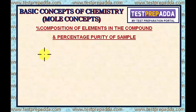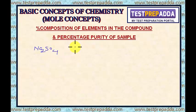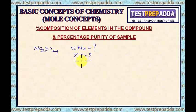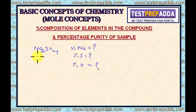First of all, how do we find the mass percentage of each element in a compound? Take an example: let us say Na₂SO₄. I want to find the percentage of sodium, the percentage of sulfur, and the percentage of oxygen. To find that, first find the molar mass of Na₂SO₄.